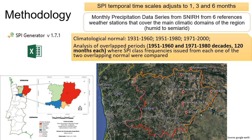The Standardized Precipitation Index was computed with monthly precipitation data series made available by SNIR, Sistema Nacional de Informação de Recursos Hídricos, from weather stations that cover the main climatic domains of the region, from humid to semi-arid, and are considered reference stations for their long-term records of more than 17 years. These are Montezinho, Vinhais, Macedo de Cavaleiros, Malhadas, Alfândega da Fé, and Carvisais.